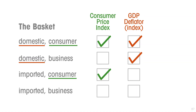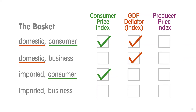There are actually many indices. There's also something called the producer price index, which is the producer's version of the consumer price index — it covers the goods and services bought by the typical business, so the basket includes business consumption items, even if they are imported. These are some of the ways that we measure price increases in an economy.